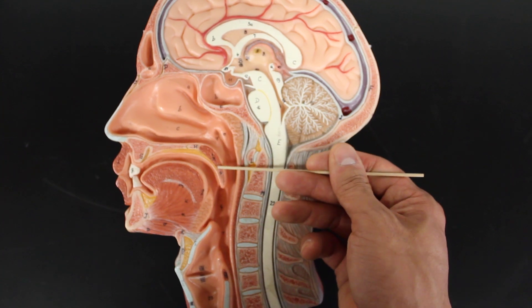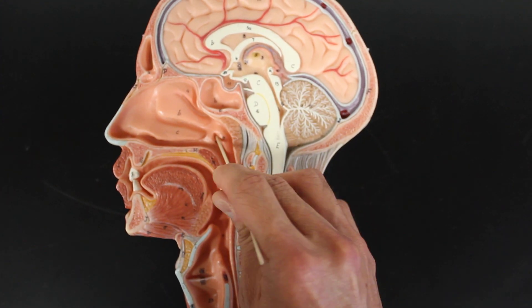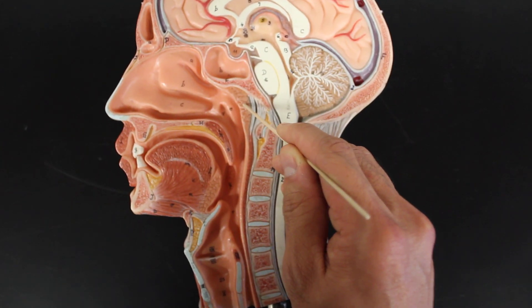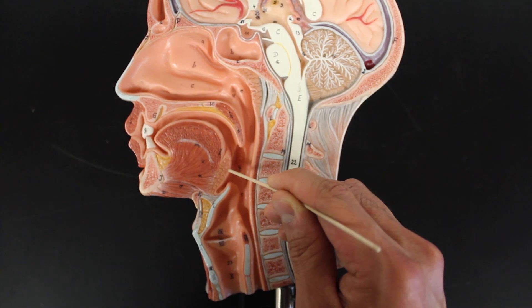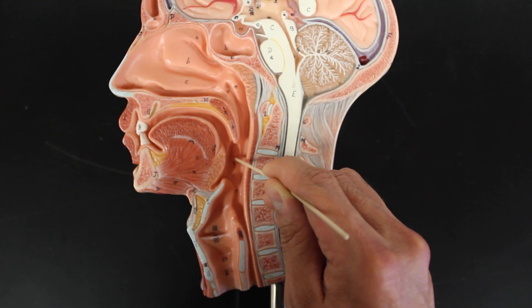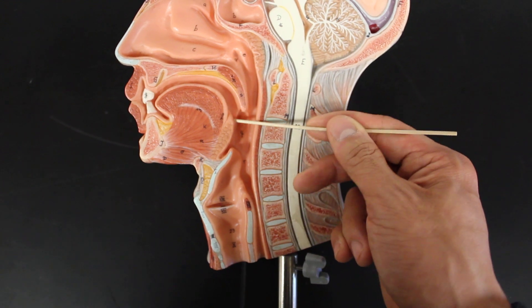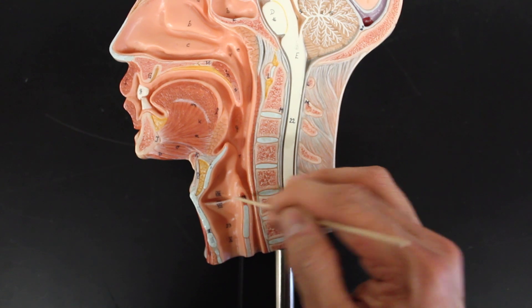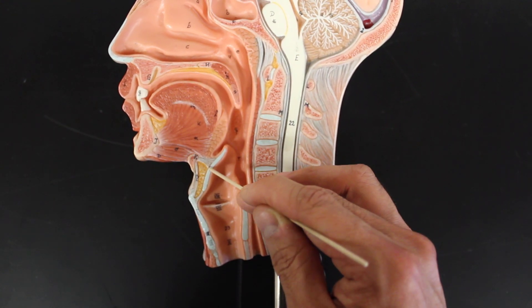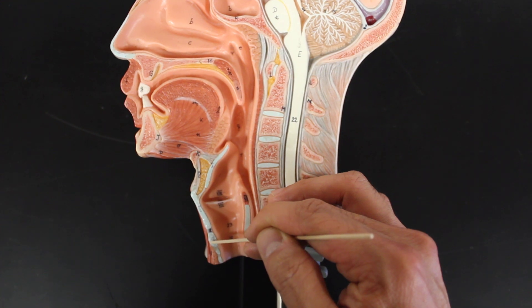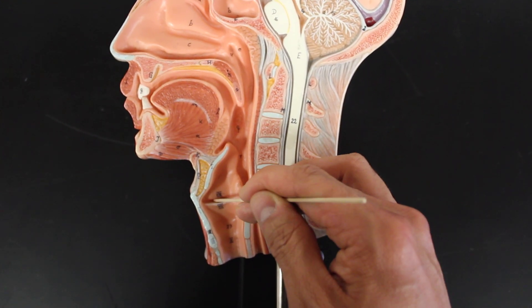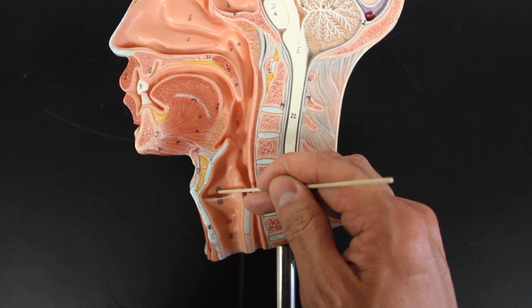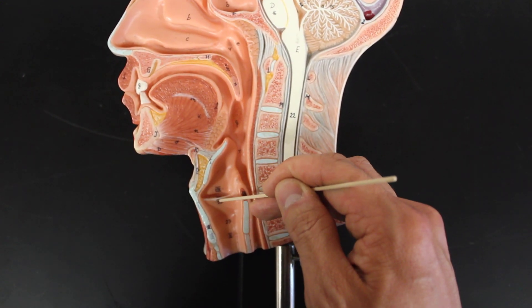The nasal pharynx extends from here to here, having the opening of the eustachian tube or the auditory tube, and then the pharyngeal tonsils. We get into the oral pharynx, which then has the lingual tonsils and the palatine tonsils. And then we get into the laryngopharynx, which then has the larynx, which has the epiglottis, thyroid cartilage, cricoid cartilage, trachea, and then the slit, the glottis itself, and then the ventricular fold, and then the vocal fold, which contain the false vocal cords and the true vocal cords.